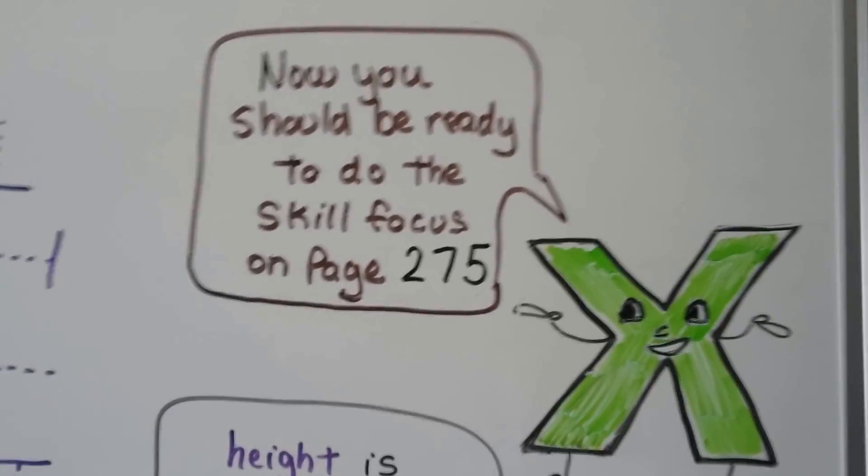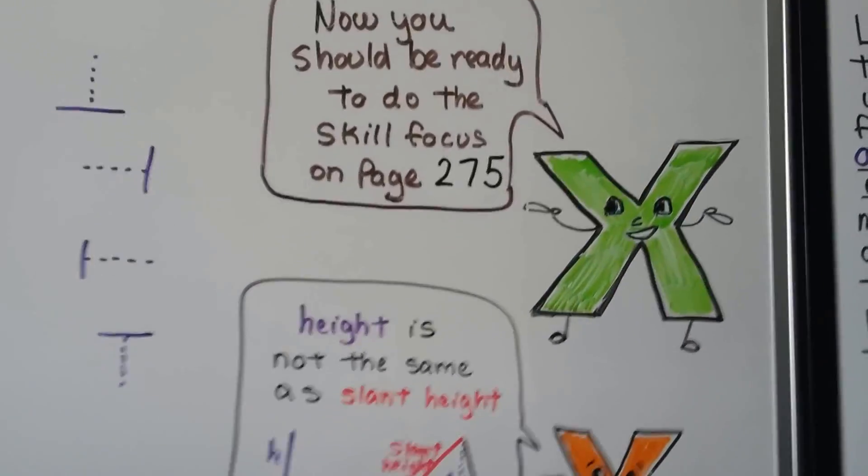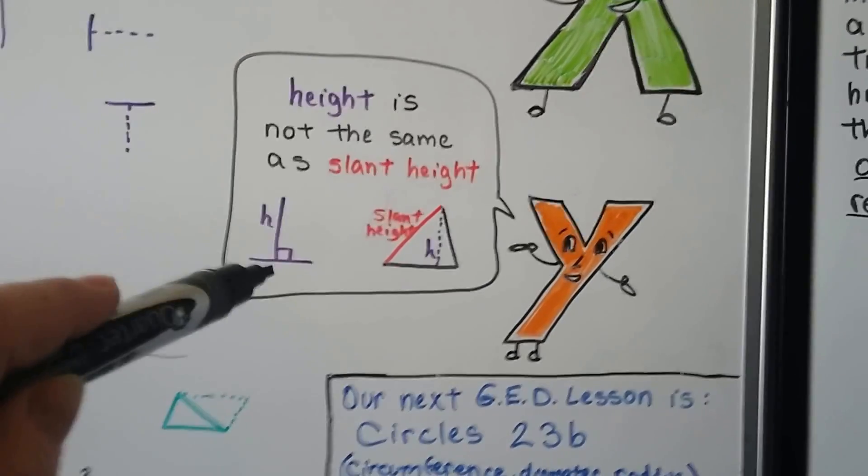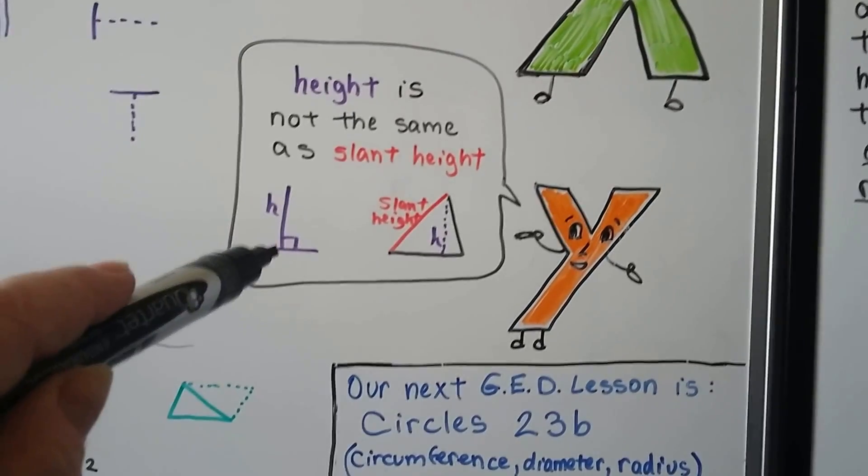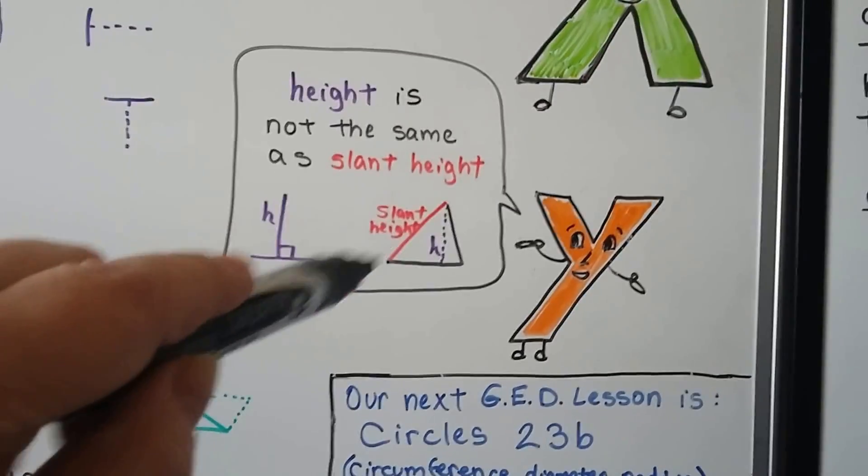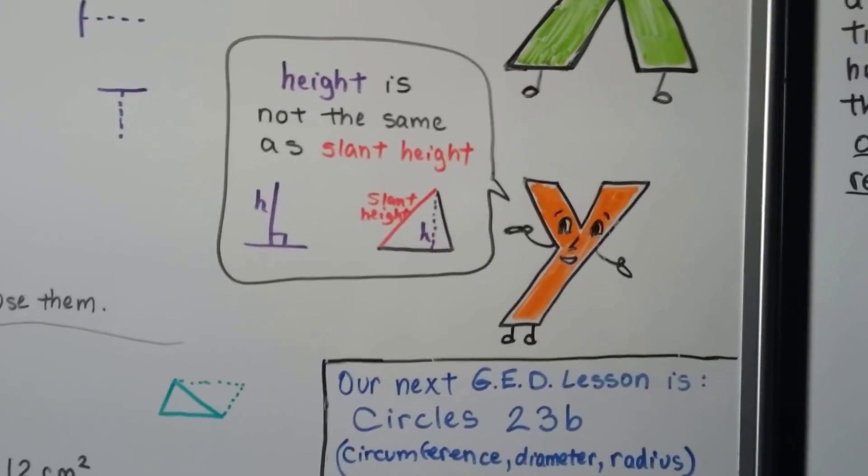So you should now be ready to do the skill focus on page 275. And just remember that height is not the same thing as slant height. This height has a perpendicular line with a 90 degree angle, a right angle here. Slant height is laying on a slant.